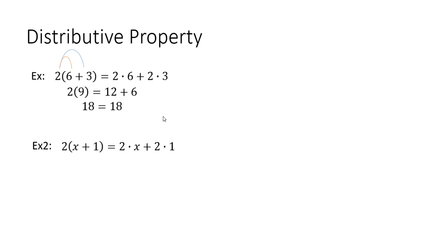Another example bringing in a variable: we have two times parentheses x plus one. Once again you're going to do two times x, which is right here, plus two times one, which is right here. Simplifying the right-hand side: two times x is 2x, plus two times one is two. So that's how you simplify that expression using the distributive property.